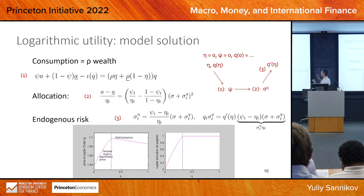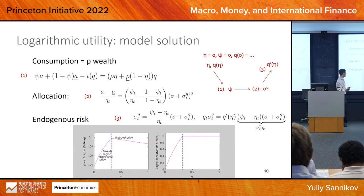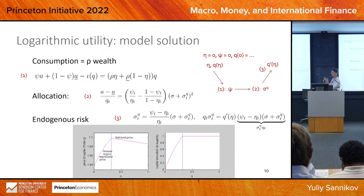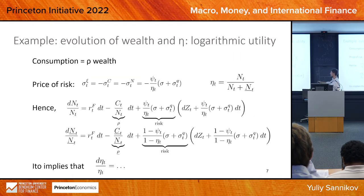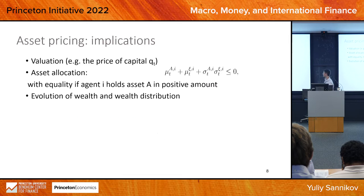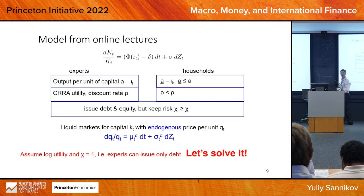This is almost a complete model solution — it tells us everything as a function of the state variable eta. The only missing piece is the law of motion of eta, which we know how to derive using the asset pricing relationship. Looking at the two wealth equations, the risk-free rate cancels out when taking the ratio, so we can find the law of motion of eta. The model is solved.